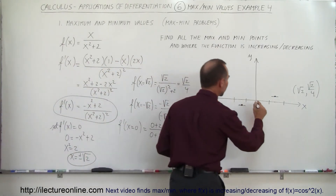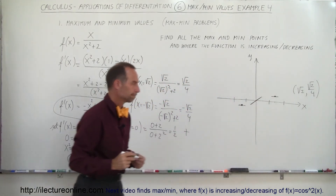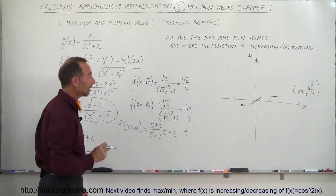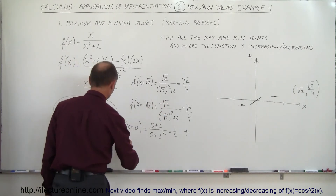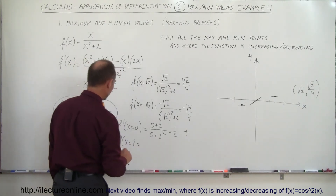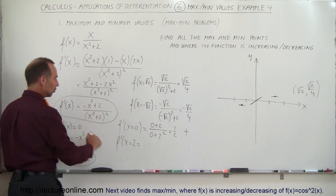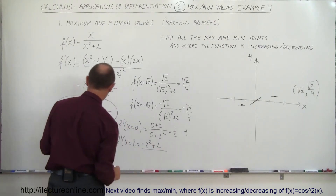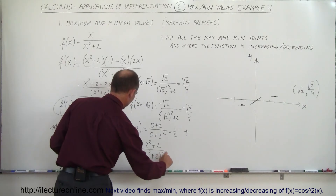So between these two critical values the function is increasing. Now let's try a point to the right — how about x equals 2? f prime of x equals 2: for every x we plug in a 2, so it will be minus 2 squared plus 2 divided by 2 squared plus 2 quantity squared.